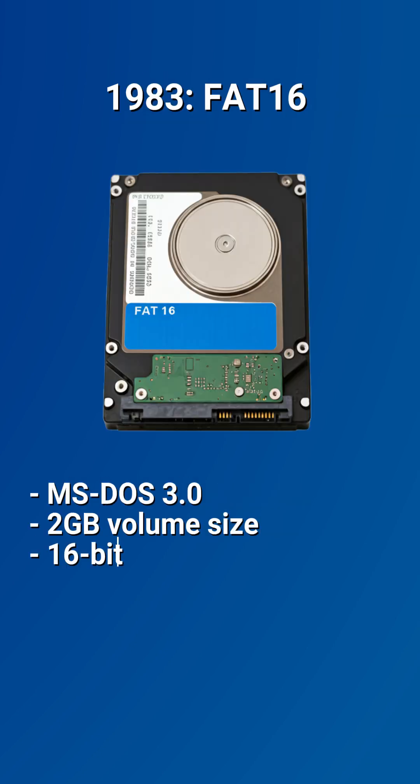By 1983, FAT16 came along with MS-DOS 3.0, designed for hard drives. It expanded storage capabilities to 2 gigabytes and offered improved cluster management, marking a significant step forward in handling larger volumes of data.